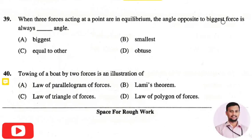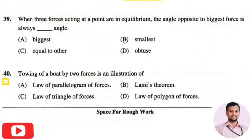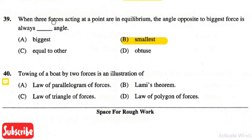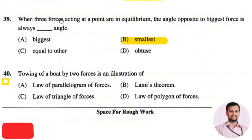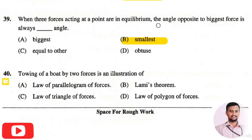The next question is: when three forces acting at a point are in equilibrium, the angle opposite to the biggest force is always a — the right answer is option two: smallest. When three forces acting at a point are in equilibrium, the angle opposite to the biggest force is always the smallest angle.